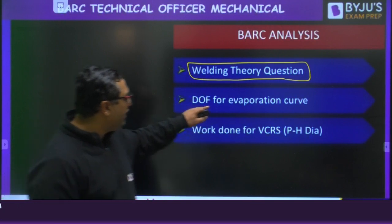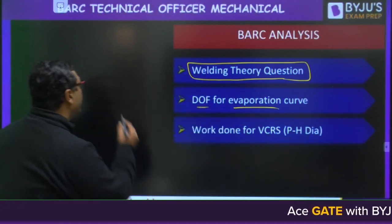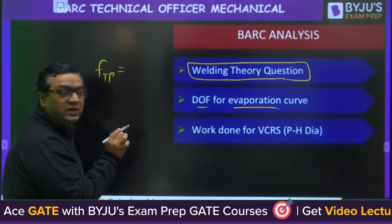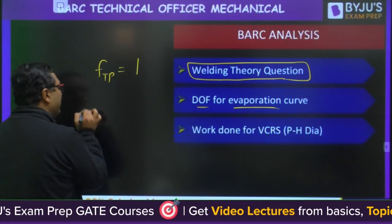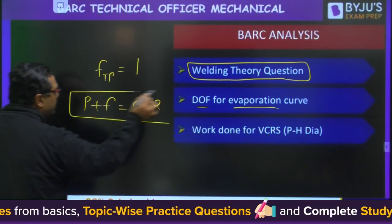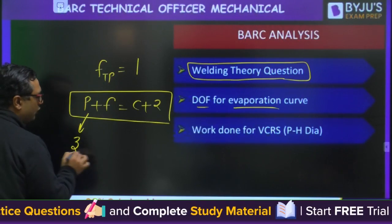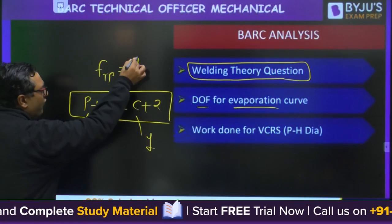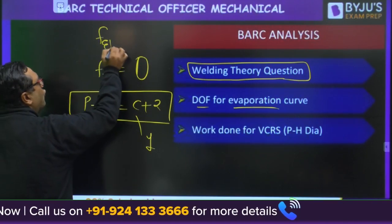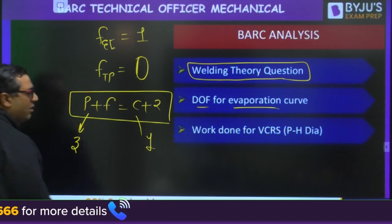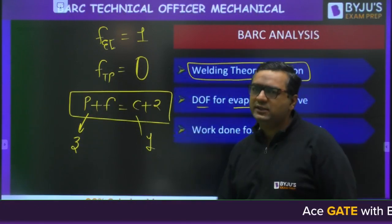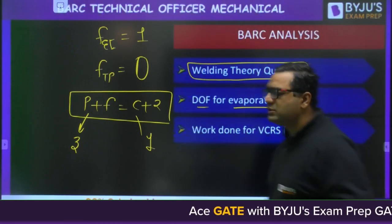A question on degree of freedom for the evaporation curve appeared. Applying the Gibbs phase rule P + F = C + 2: for the triple point, phases = 3, components = 1, so degree of freedom = 0. For the evaporation curve, degree of freedom = 1. For a region it is 2, and for the triple point it is 0. I have discussed this many times in classes.